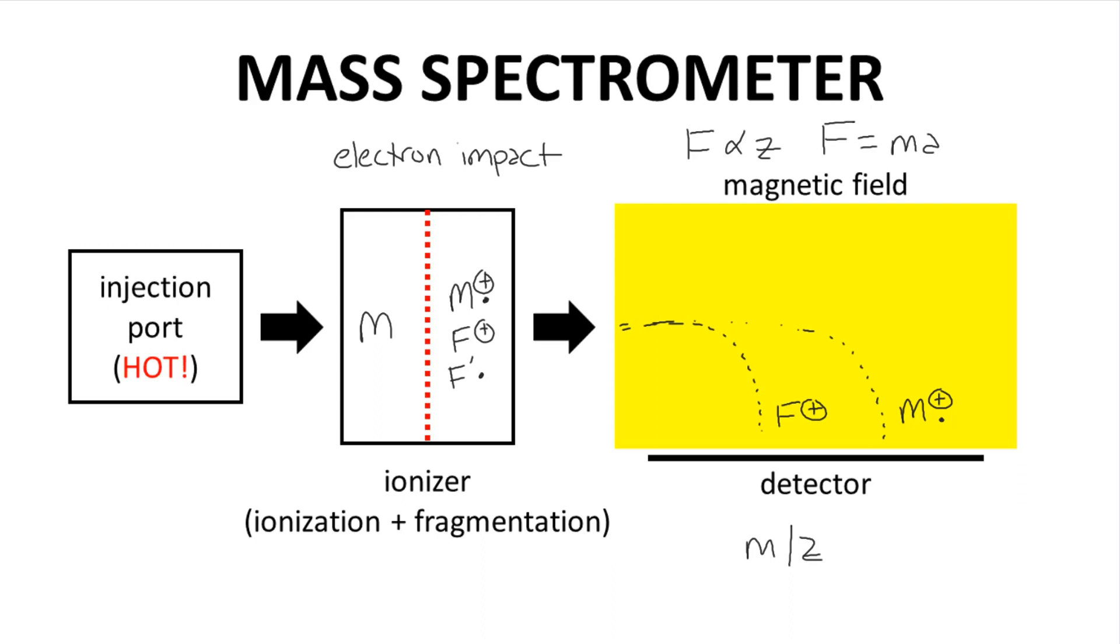How about the fragment radical? Because it is neutral, z = 0, its path remains straight, and it will not be detected.